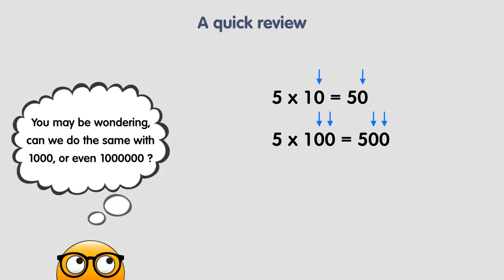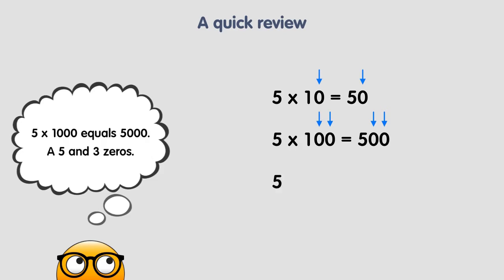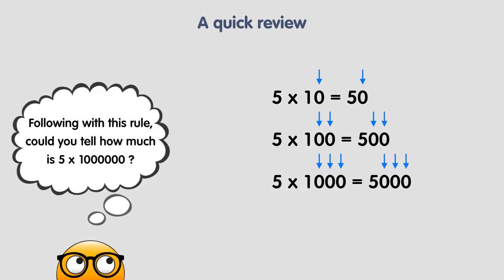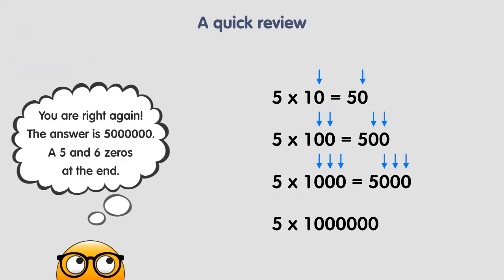You may be wondering, can we do the same with 1000, or even 1 million? Well, the answer is yes. 5 times 1000 is equal to 5000 — a 5 and three zeros. Following this rule, could you tell how much is 5 times 1 million? The answer is 5 million — a 5 and six zeros at the end.